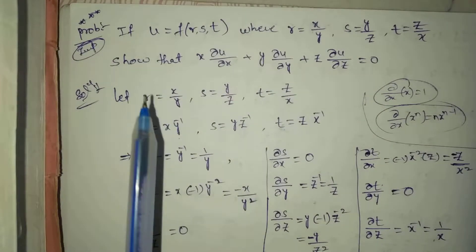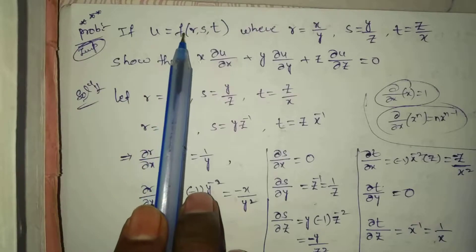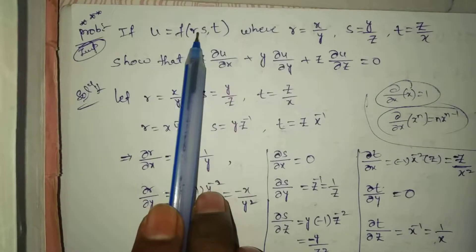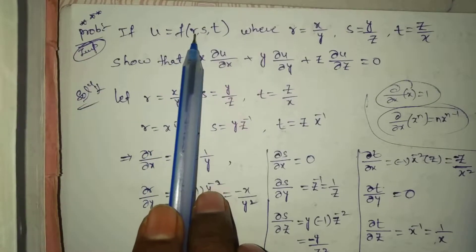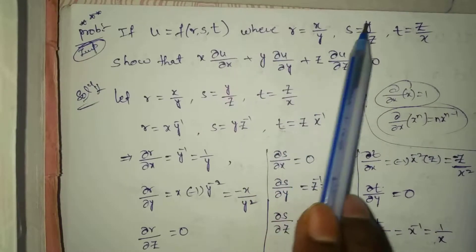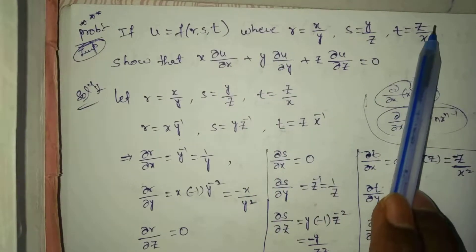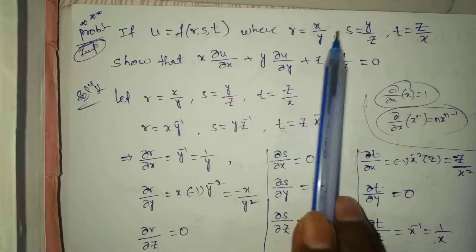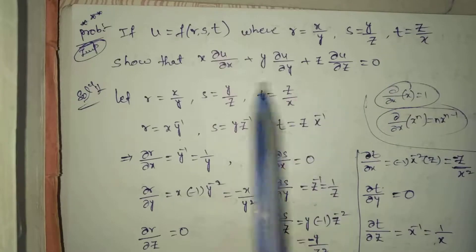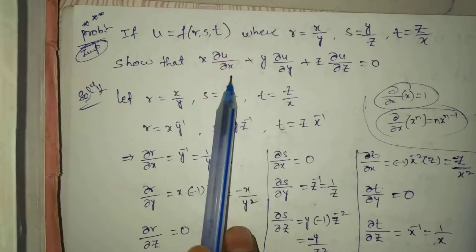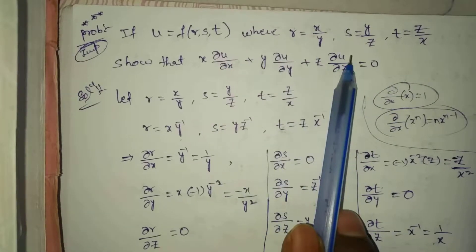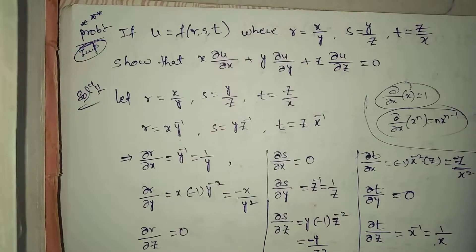The problem is: if u = f(r, s, t), where f is a function involving three variables. Each of the three variables r, s, t are intermediate variables; u is the dependent variable, where r = x/y, s = y/z, t = z/x. Here x, y, z are independent variables. Now show that x·∂u/∂x + y·∂u/∂y + z·∂u/∂z = 0.